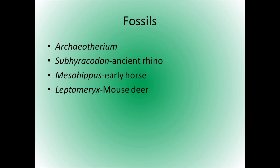The fossils found at the Big Pig Dig include Archaeotherium — nicknamed the 'Hell Pig' or 'Terminator Pig' — which is actually more closely related to hippos than pigs. There's also Subhyracodon, an ancient hornless rhino roughly the size of a domesticated pig; Mesohippus, an early horse; and Leptomeryx, a type of mouse deer — a very tiny, small deer-like animal.